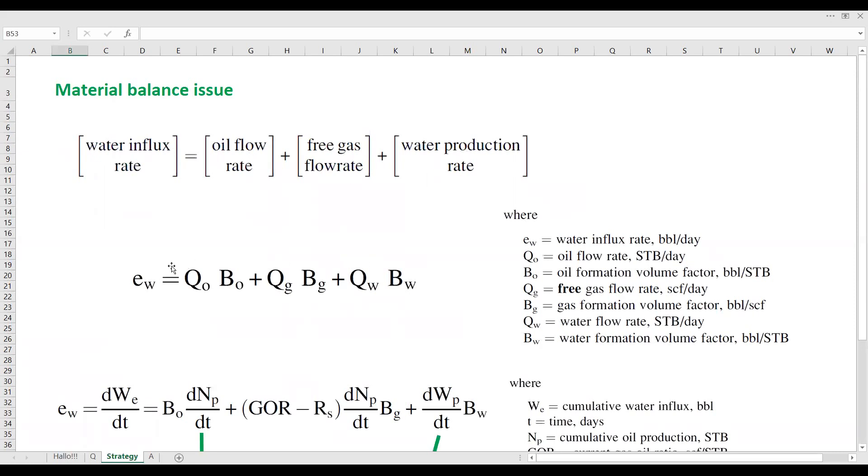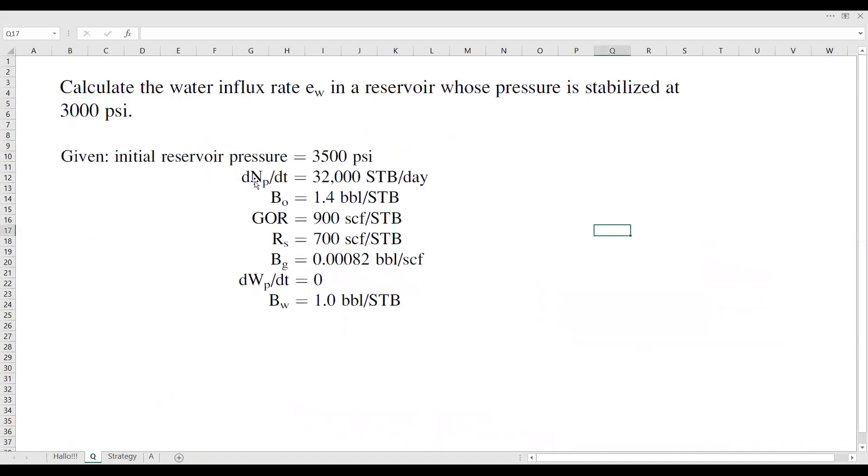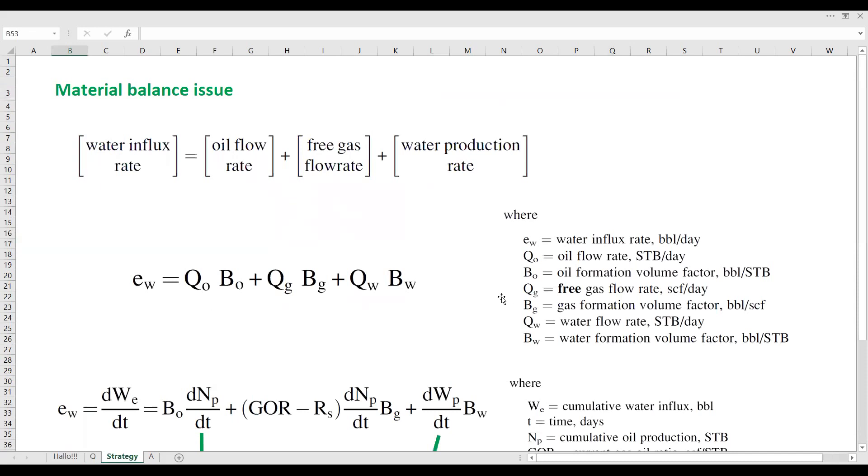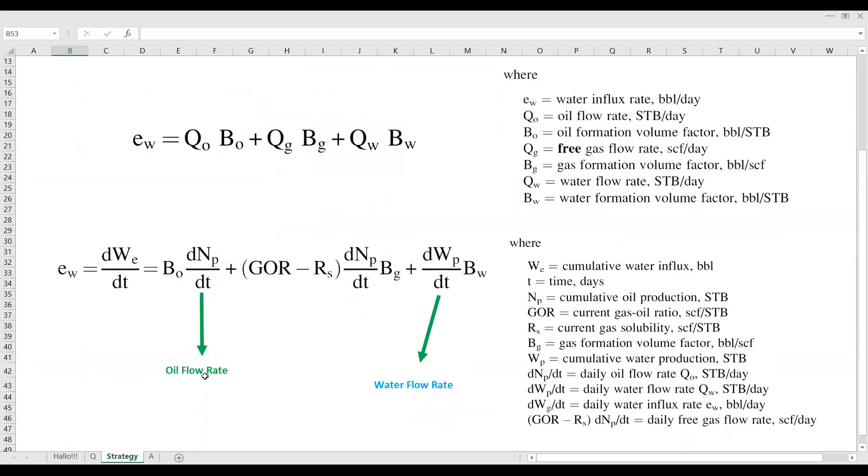All right, and then this is the formula, water influx rate is the summation of oil flow rate, free gas flow rate, and water production flow rate. Okay, and because we are given this data, dNp by dt, or the rate of change of oil cumulative production with respect to time, we need to realize that that's actually oil flow rate. Okay, this one is actually oil flow rate, and also this one is water flow rate.